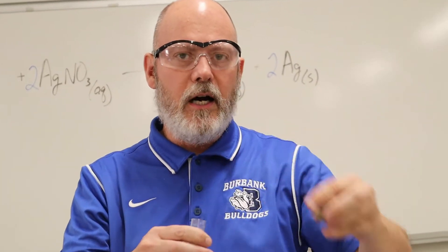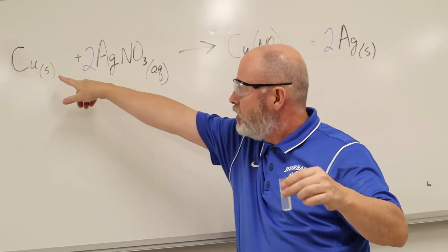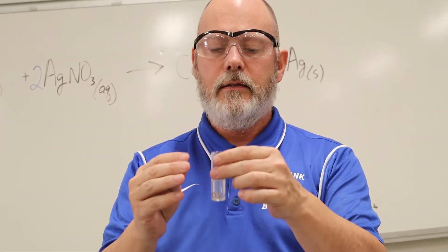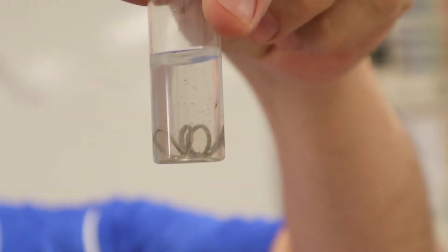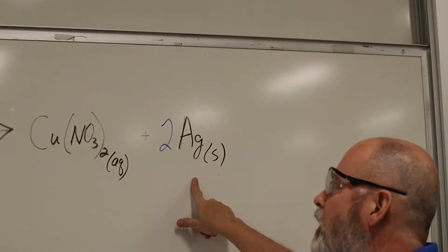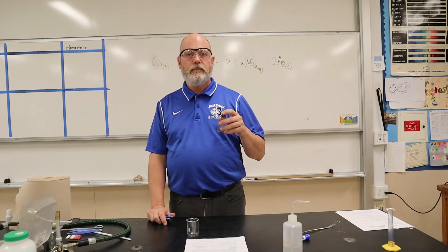Now we're going to drop the solid copper into the silver nitrate solution. There you go — and I've got to shake it like this for about 20 minutes. You can already see, if you look carefully, some of the gray flakes appearing — that is the silver. We've got to let the reaction go for 20 minutes, so we'll take a break and come back.